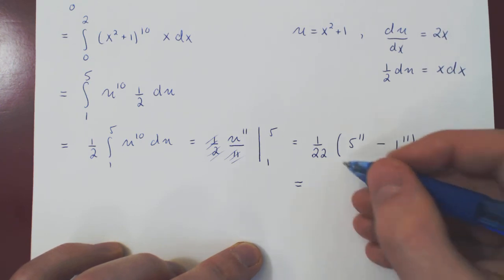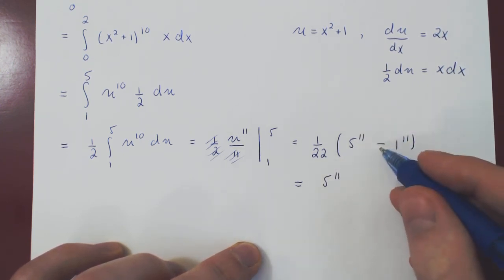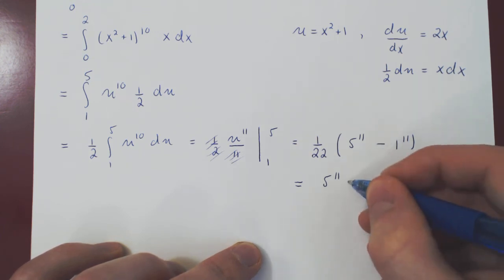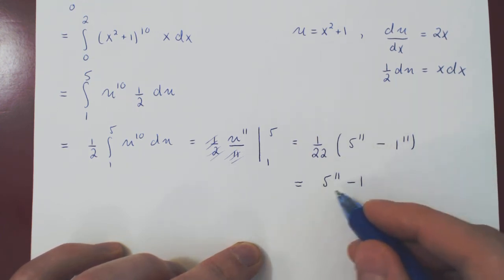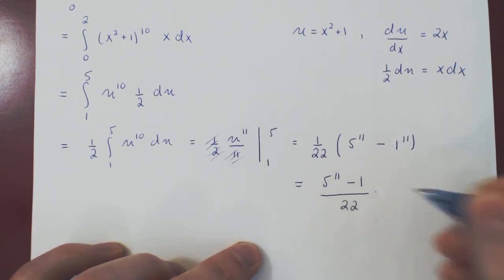We can leave 5 to the 11 as 5 to the 11, this is rather large. But minus 1 to the 11 is just 1. So we have 5 to the 11 minus 1 over 22, and that is our final answer.